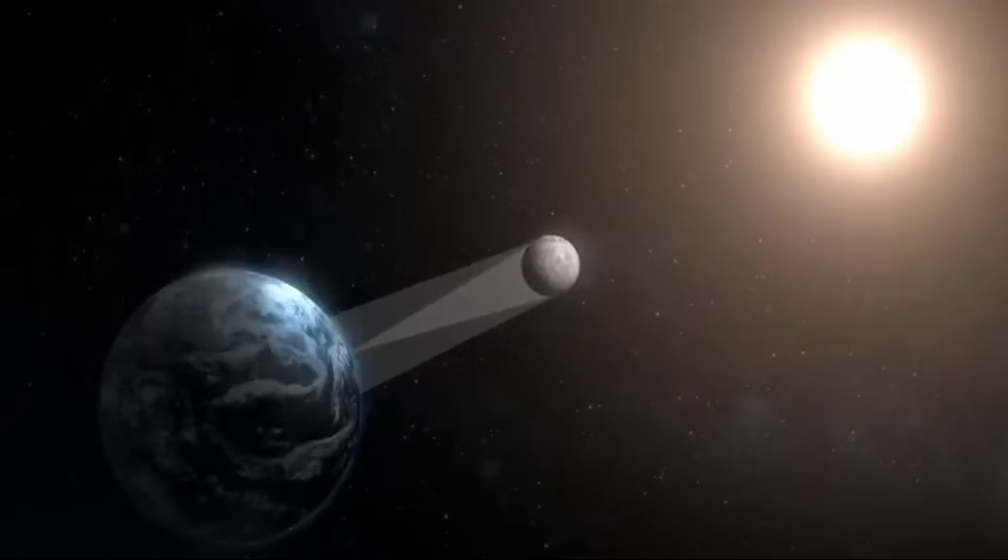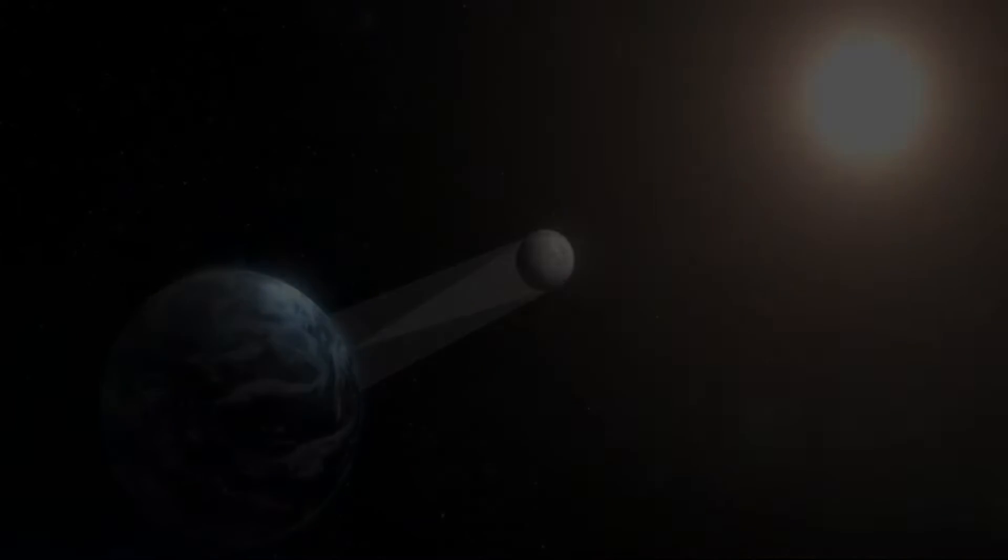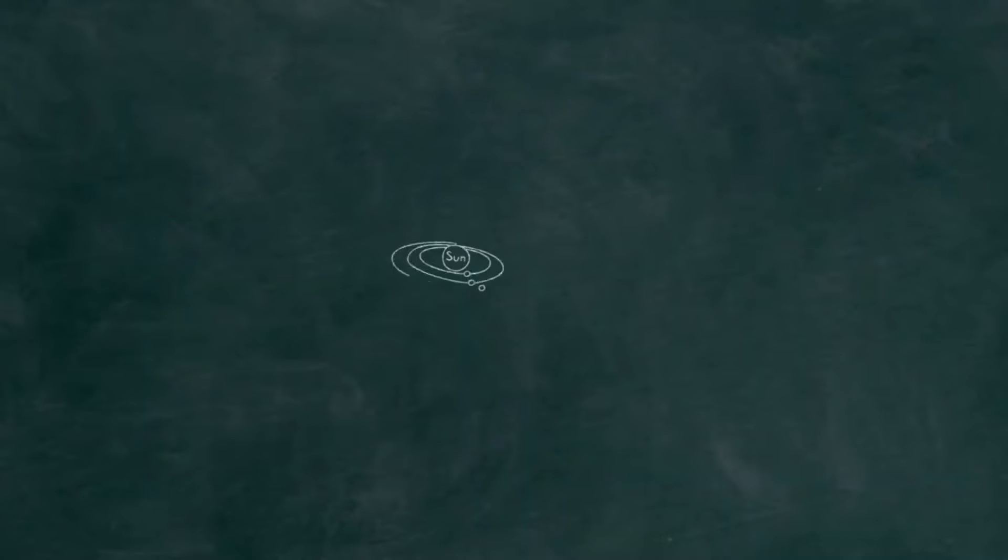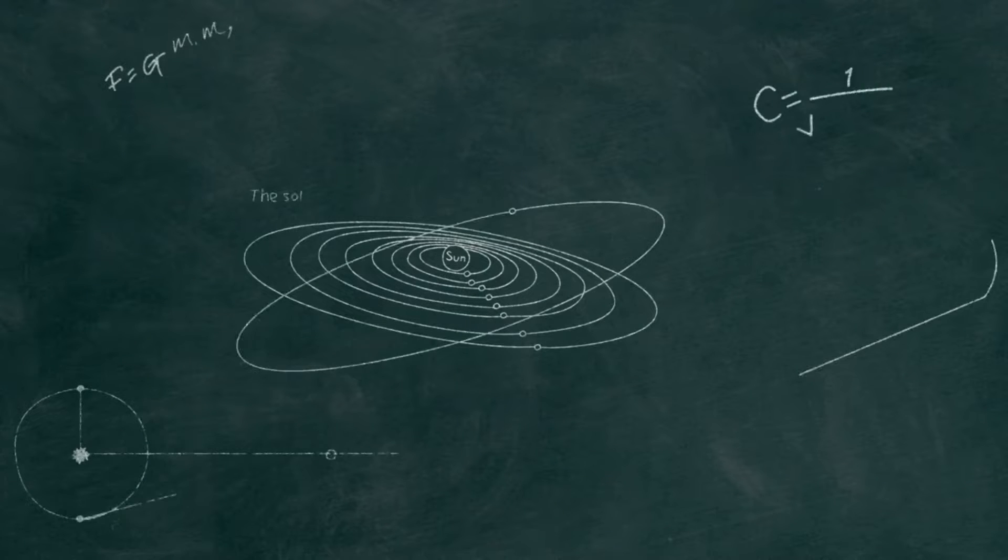This phenomenon occurs because the time it takes for the Moon to complete one orbit around Earth is the same as the time it takes to complete one rotation on its axis.